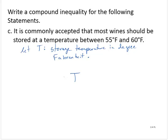Now, it doesn't say T can be 55 or 60 — it must be between. So I must have strict inequalities with 55 as the lower bound and 60 as the upper bound.